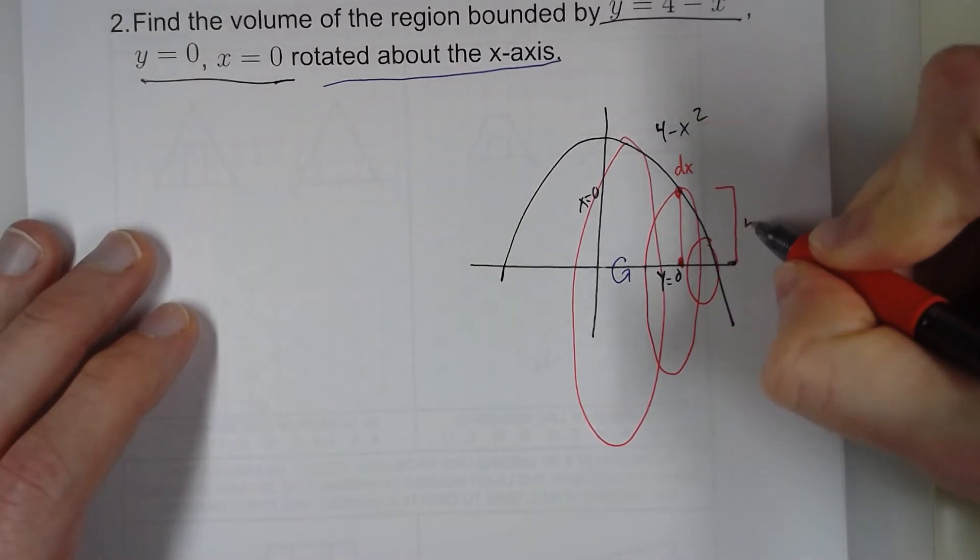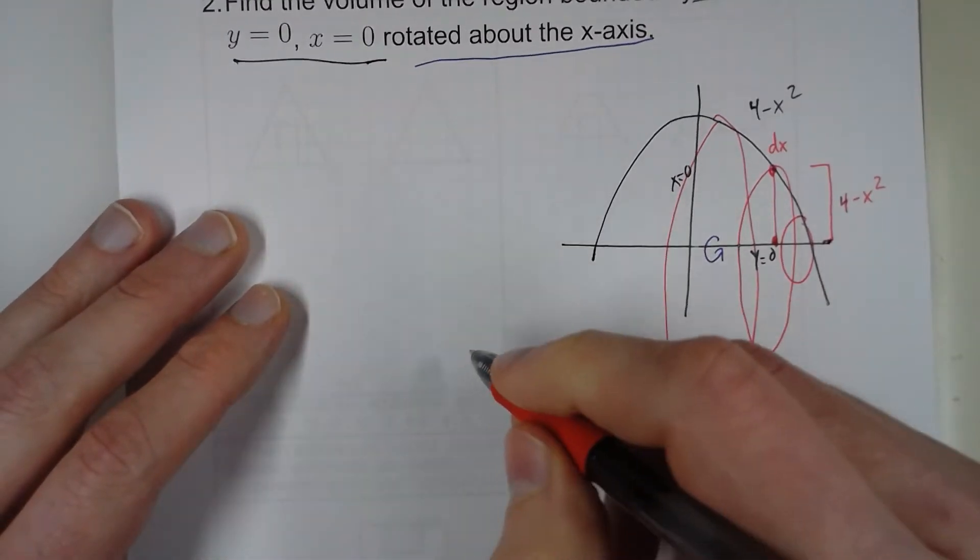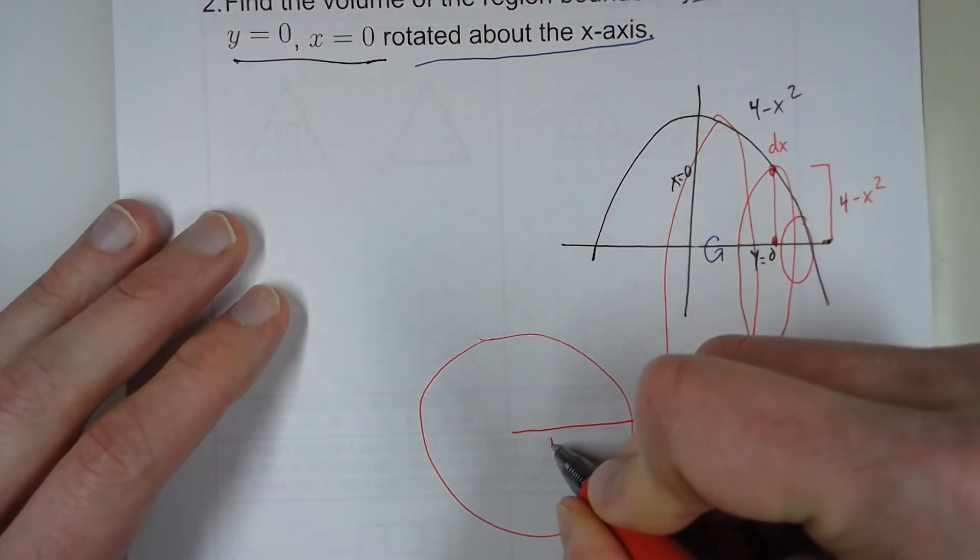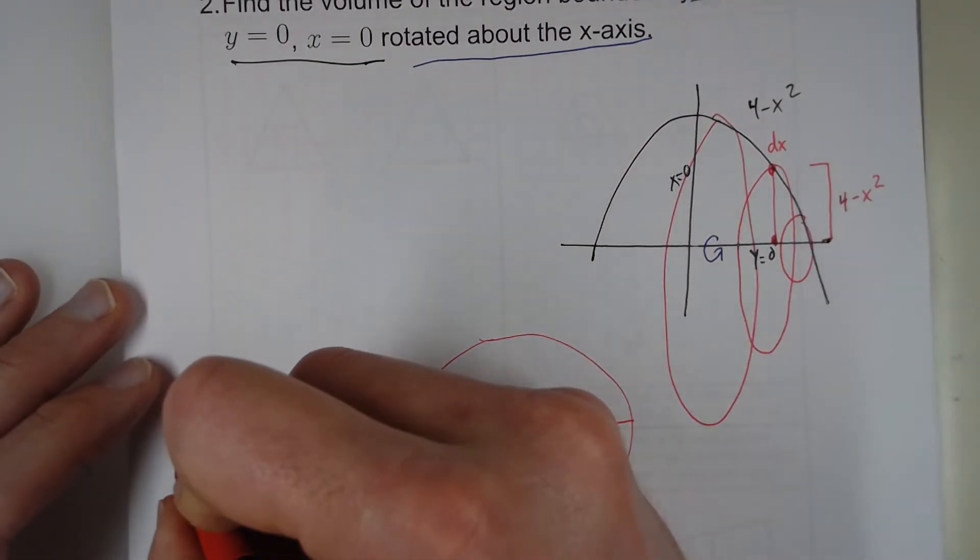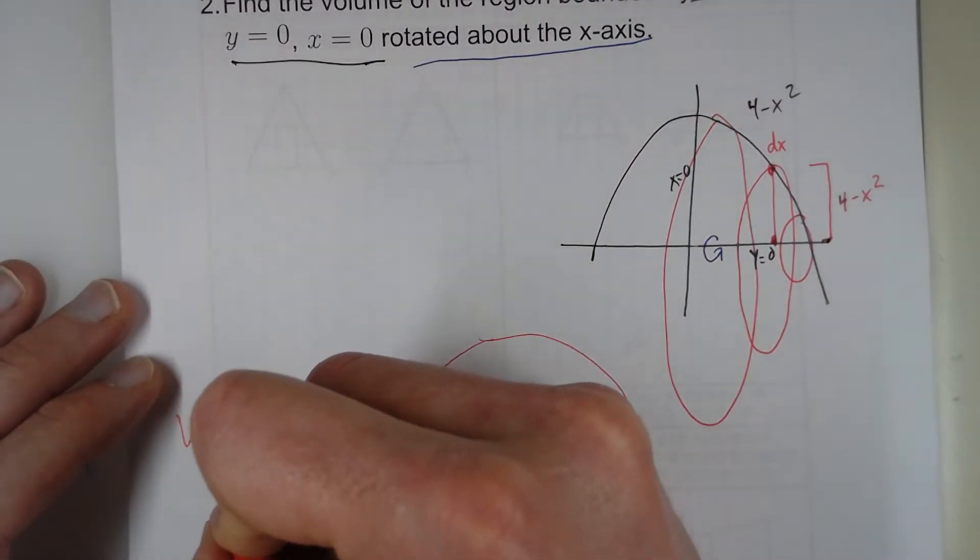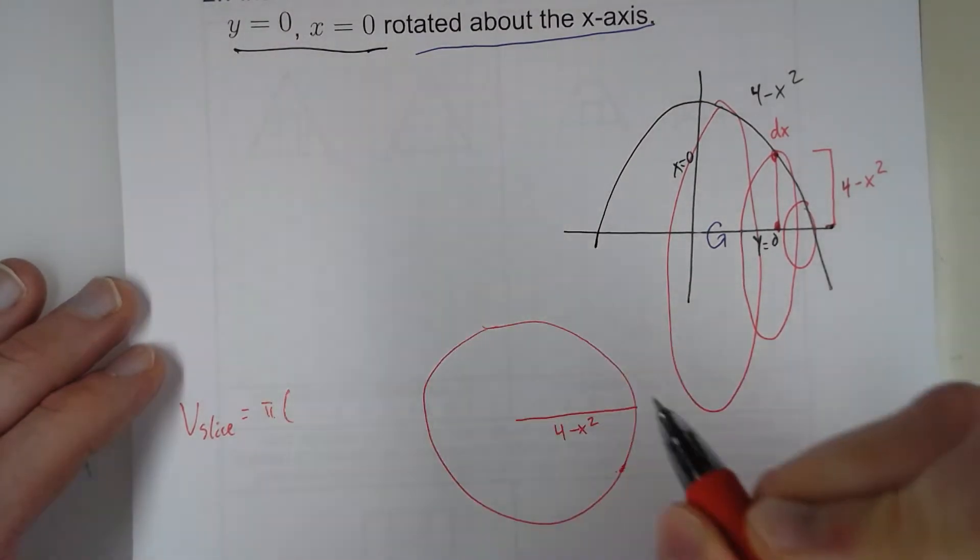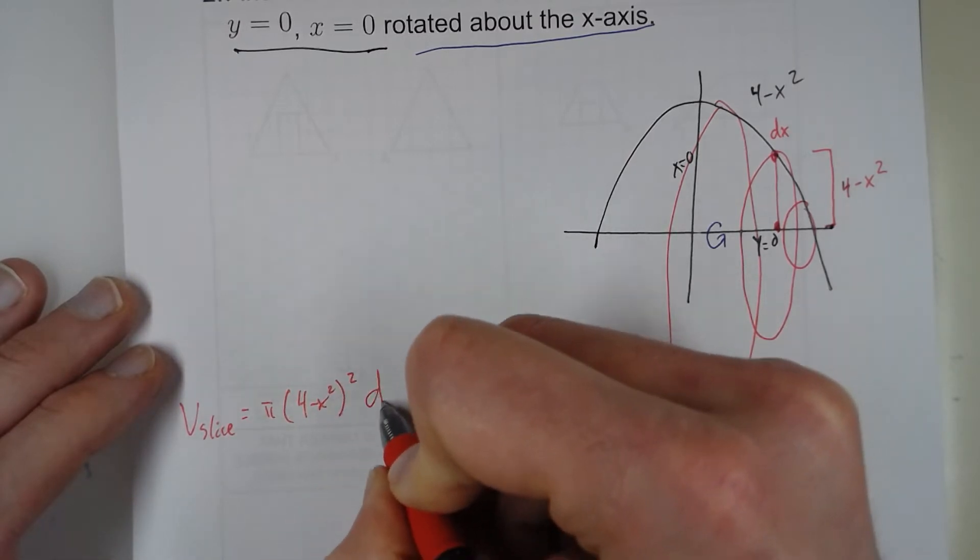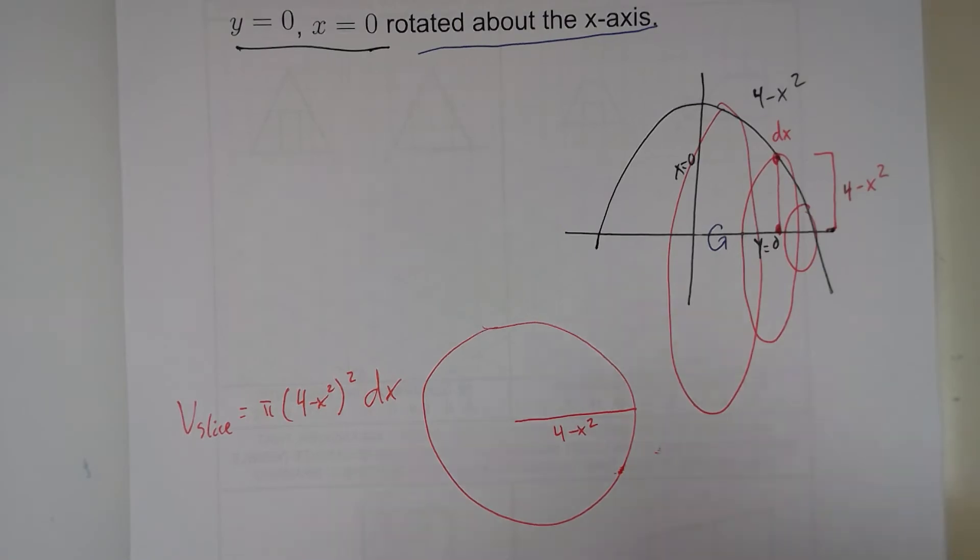So the radius is 4 minus x squared. So over here, there's my circle. 4 minus x squared is the radius. So the volume of this slice is, it's a full circle, so pi. Now, what is r? That is 4 minus x squared squared. And the thickness is dx.